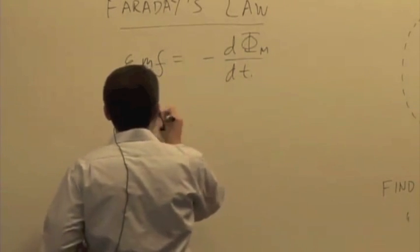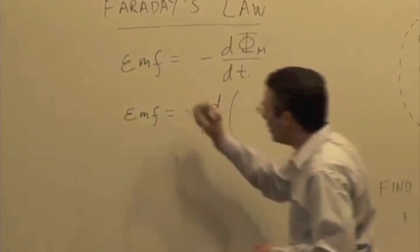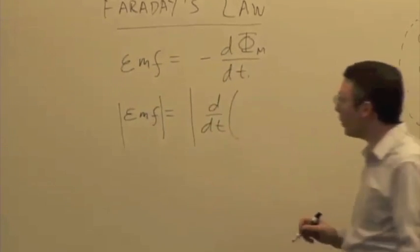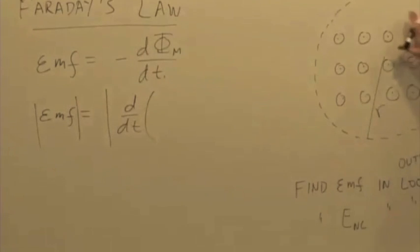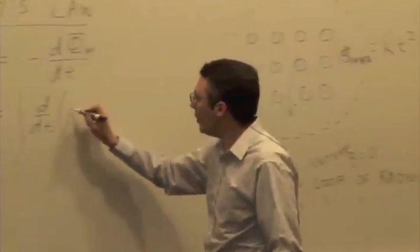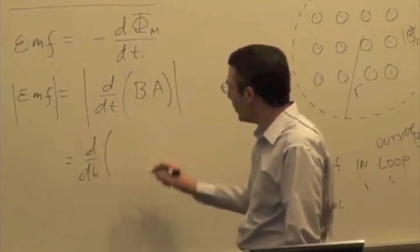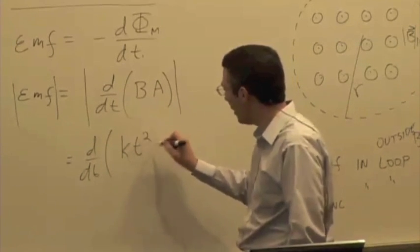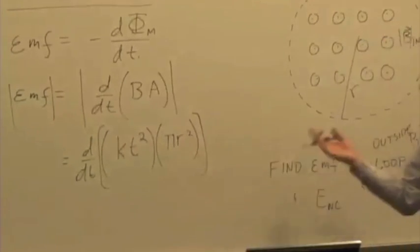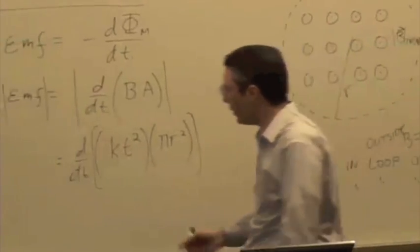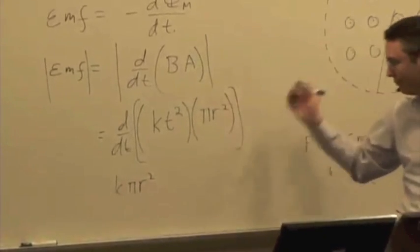I can say that the EMF is equal to negative dΦ/dt. Let's just look at the magnitude and we'll get the direction later, so I'm not going to worry about the sign yet. This is a uniform magnetic field over this circular area, so the flux is just B times A. We have the time derivative of this function for magnetic field, kt squared, and the area is π R squared. The area doesn't depend on time, K doesn't depend on time, so the only thing that depends on time is T squared. So I have K π R squared and the derivative of T squared is just 2T.